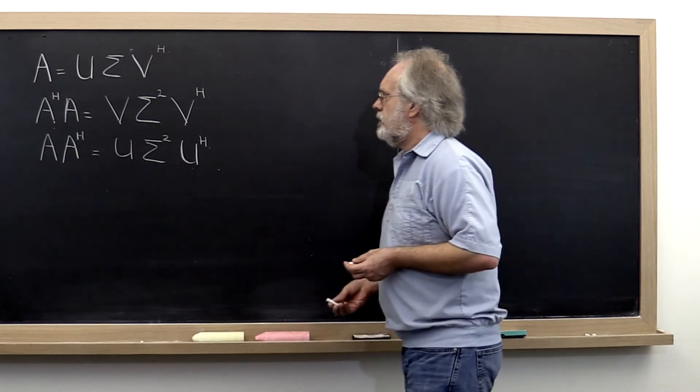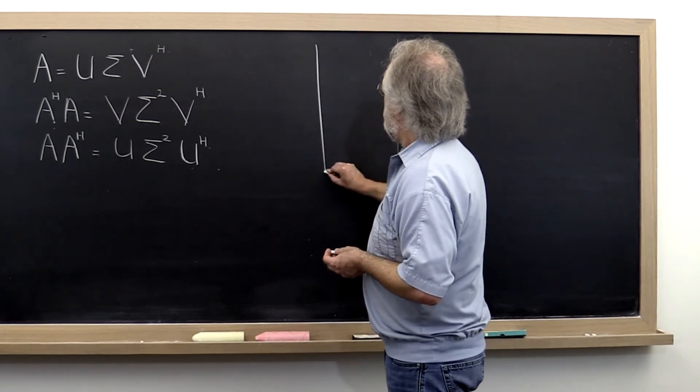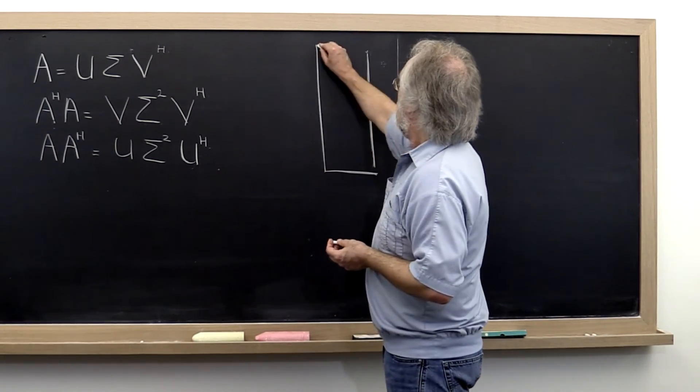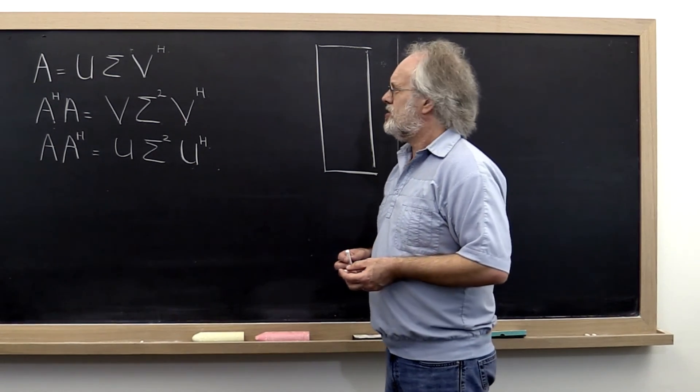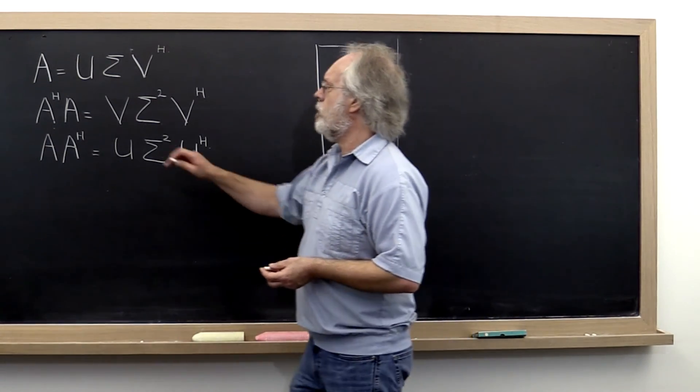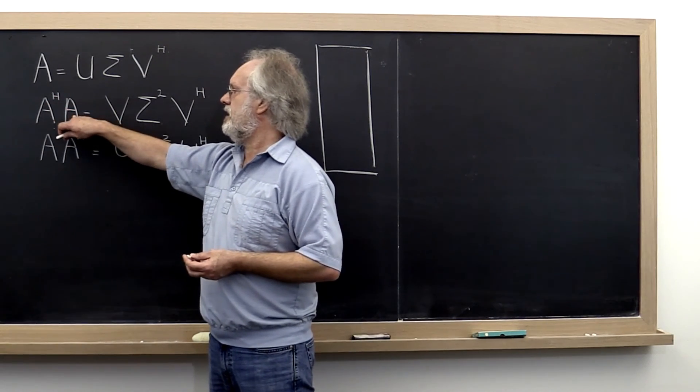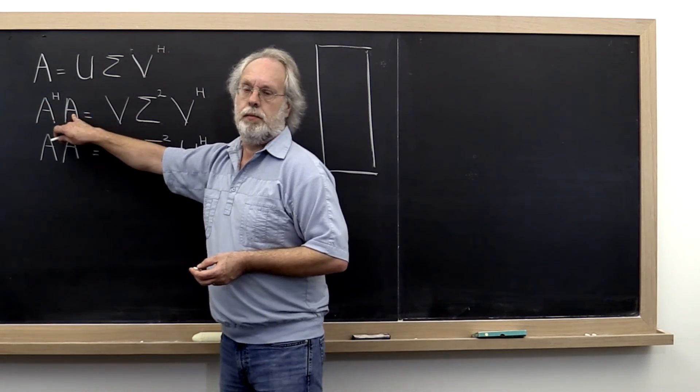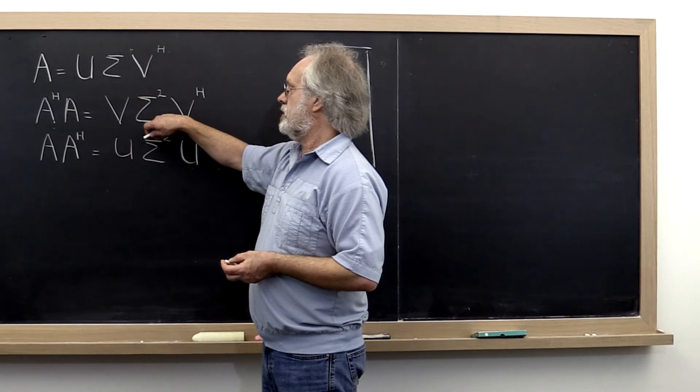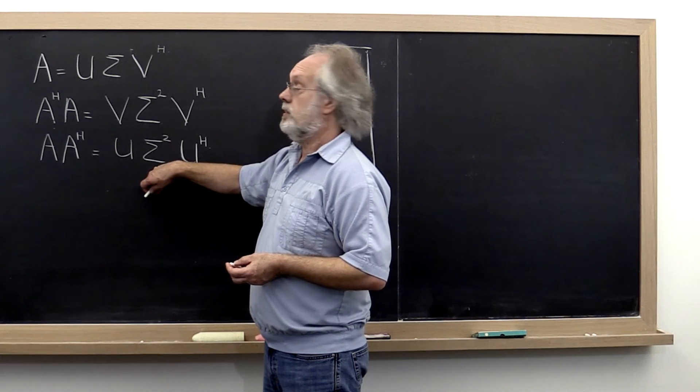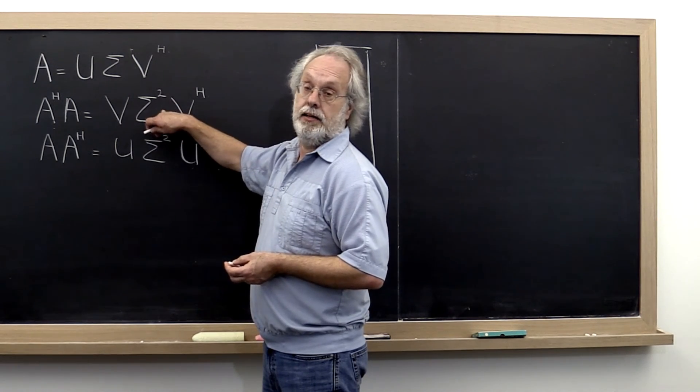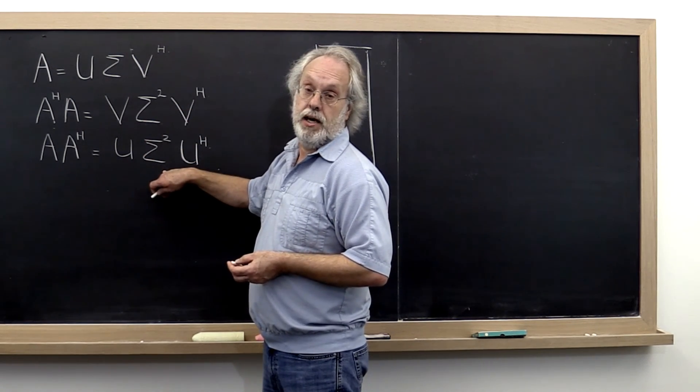Now typically matrix A has many more rows than columns in practical applications. So forming A^H*A is the better idea because this square matrix has size n by n, which is smaller than the m by m matrix from A*A^H.